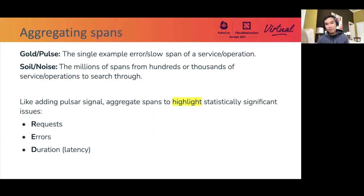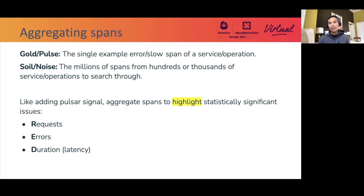The gold and the pulse in our analogy is like a single example error or slow span from a service operation. And the mountain of soil, or the noise, is much like the millions of spans from hundreds or even thousands of service operations to search through. Much like adding the pulsar signal together to find that distinct pulse, we aggregate the spans to highlight the statistically significant issues from the requests, errors, or duration metrics that we gather.